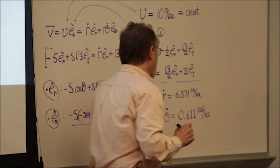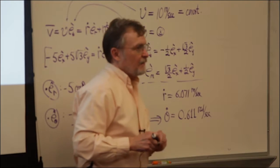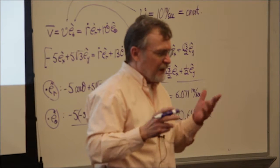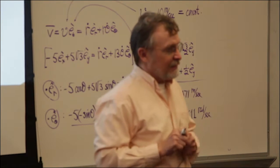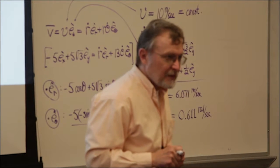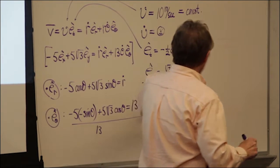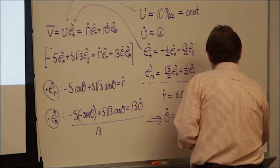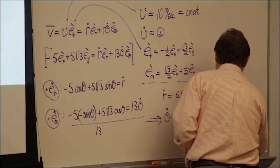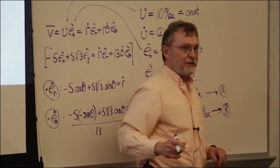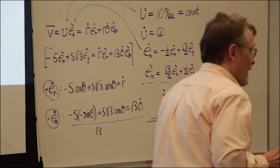These are rounded to three decimal places. A useful technique: when you calculate a number you'll need later, store it in your calculator's memory. My Casio has six memories, A through F. When I calculate r-dot I store it in memory A, and theta-dot in memory B, so I can use them in exact form later on.